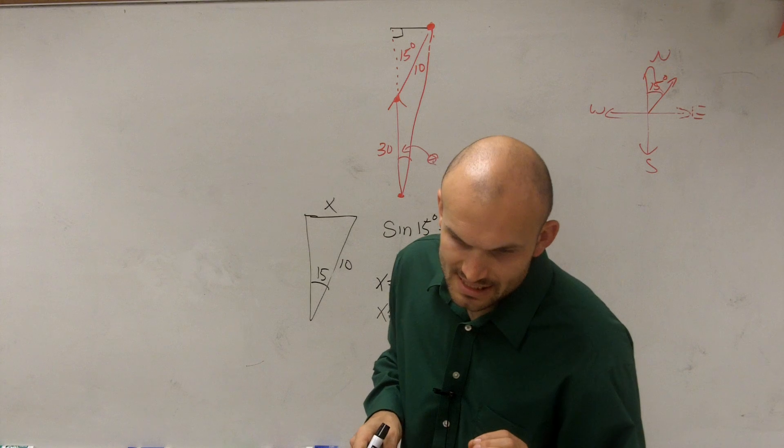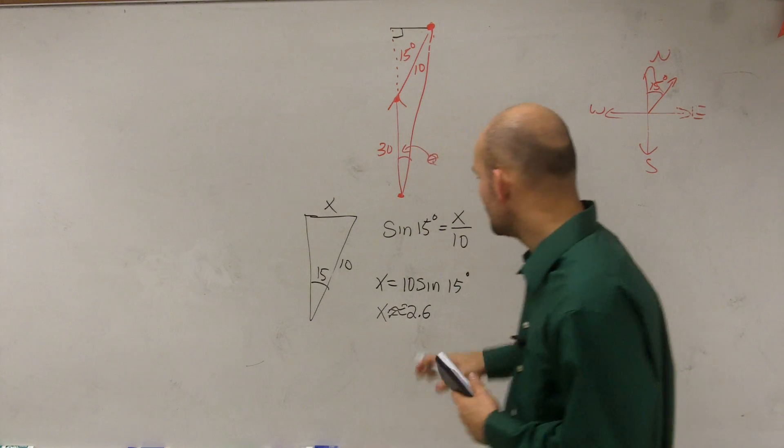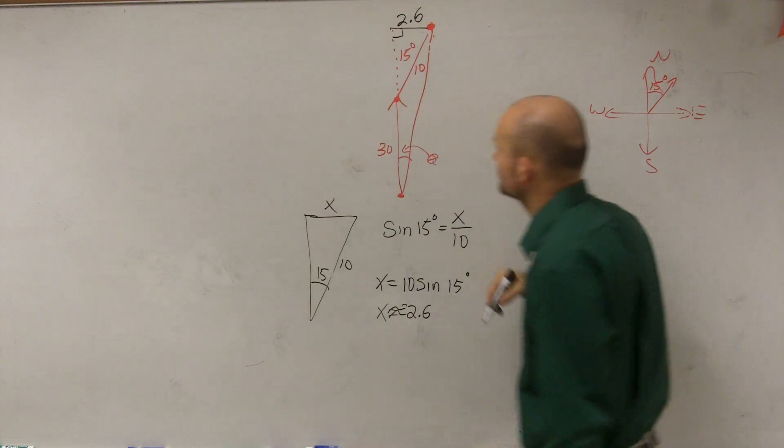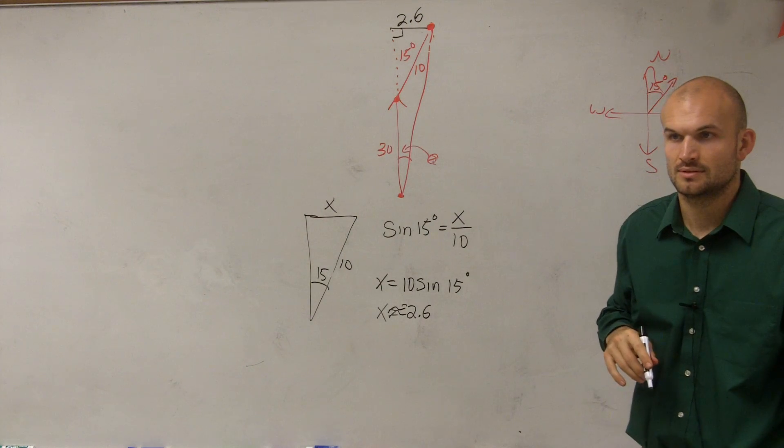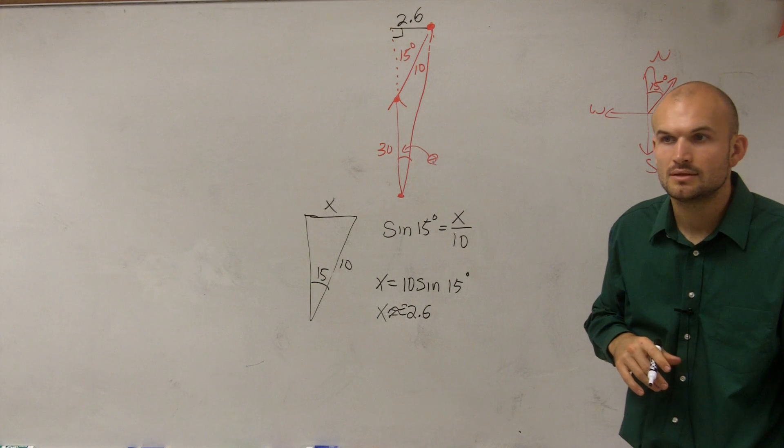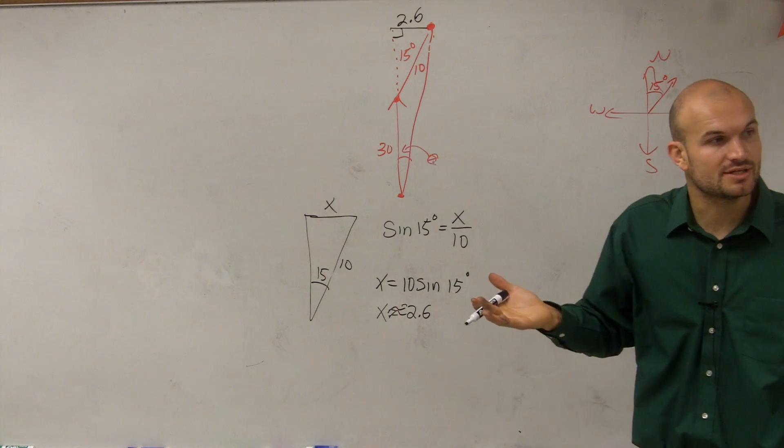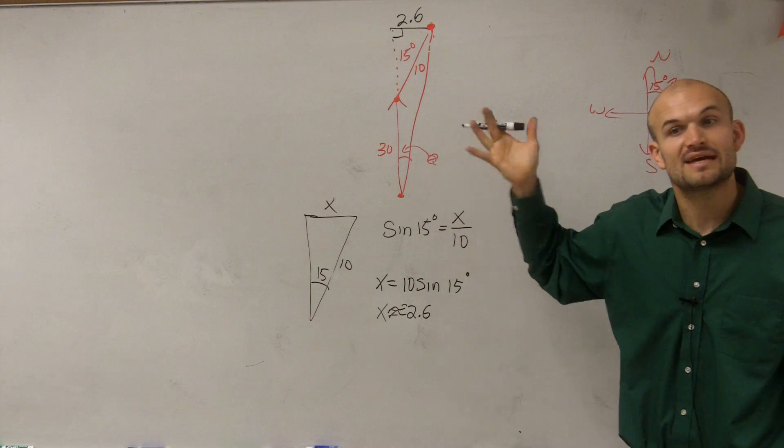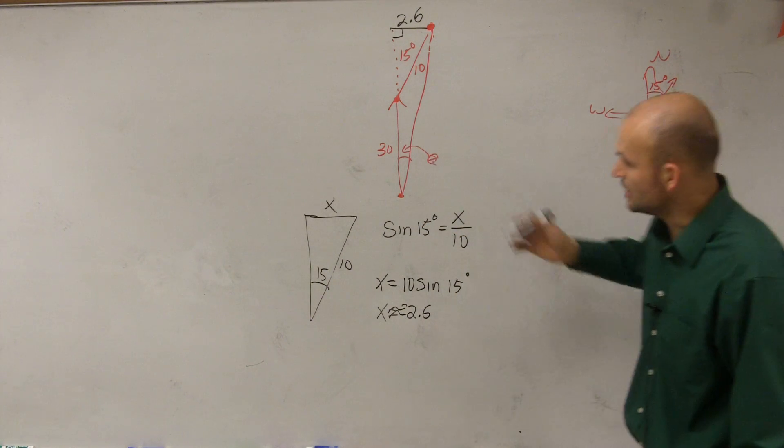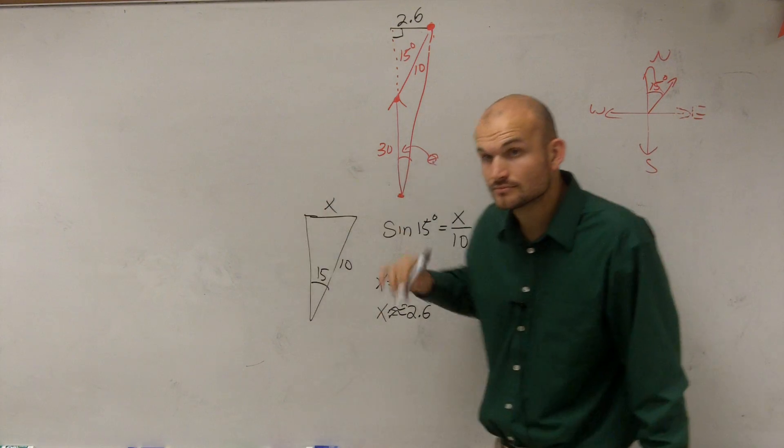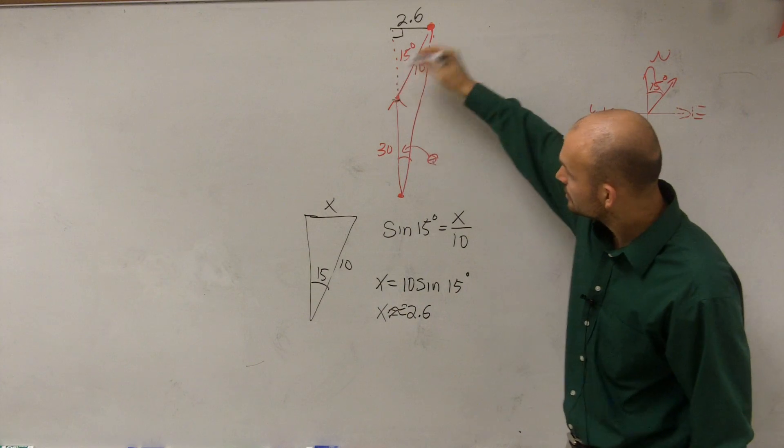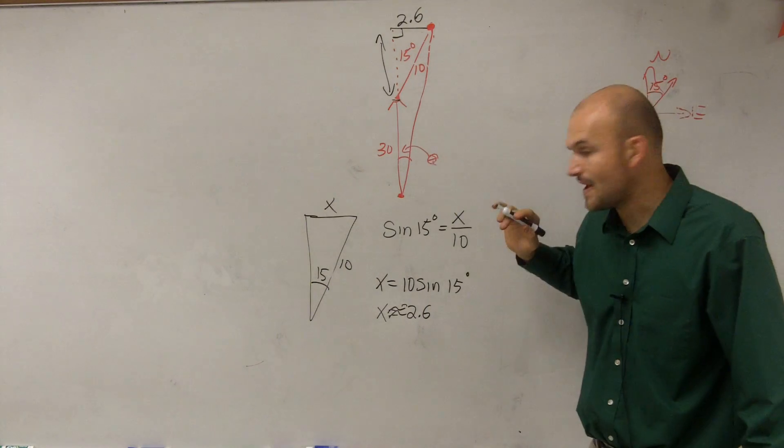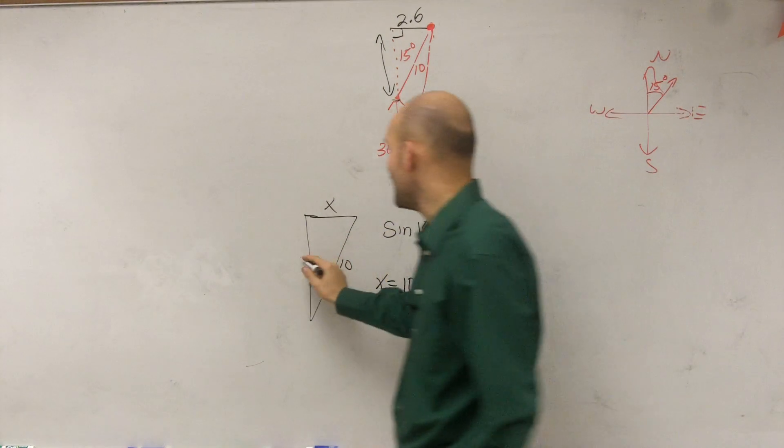Now, the next thing that we want to do, so we have 2.6 nautical miles. So now we know that this length is 2.6, right? Do we have enough information now to be able to figure out what theta is? No. To figure out theta, you're going to at least need to have two side lengths. So what we can also do, Marco, we have 30, but 30 only goes to here. So therefore, that means we need to figure out what this length is. So to figure out that length, we can figure out what y is.